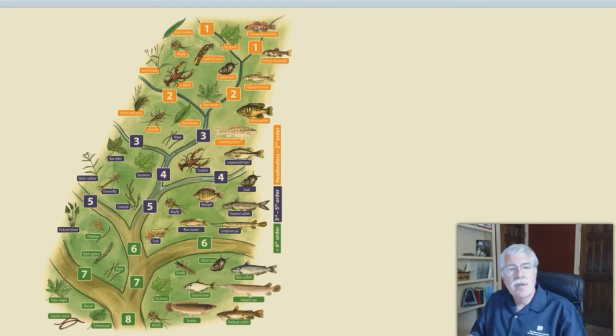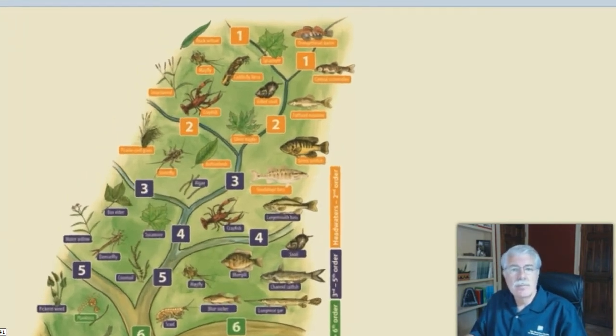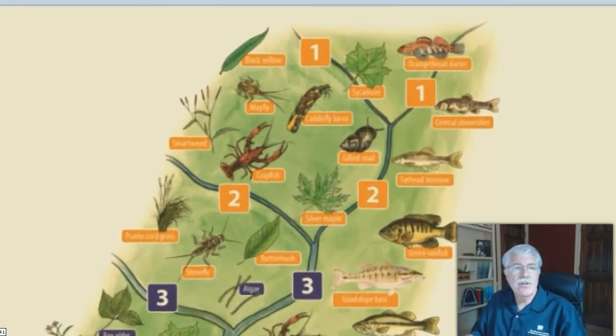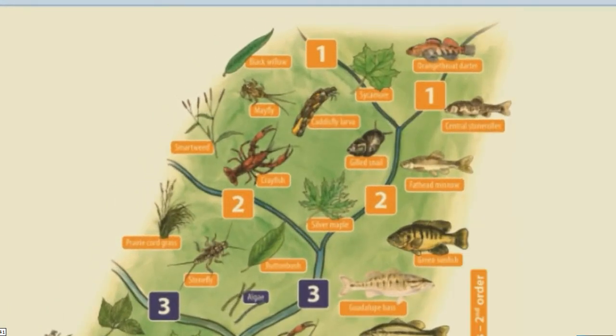First and second order streams. In the headwaters of a stream, the water is shallow. The stream bottom is often rocky and there are very few aquatic plants. A lack of food limits the number of animals that can live there.